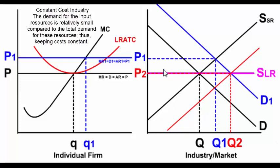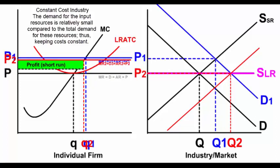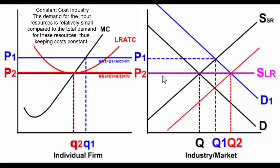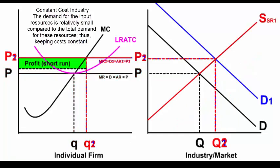As this occurs in the industry, watch what happens to the individual firm. The individual firm must take that market price, so the price goes down for the firm and the output also goes down for the firm. And now there are zero economic profits.